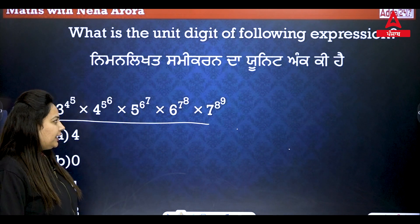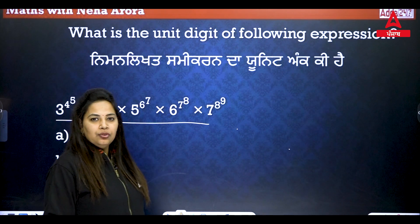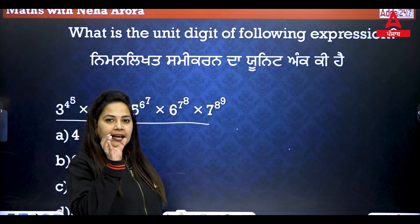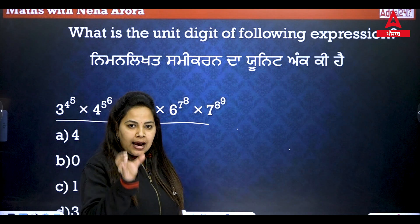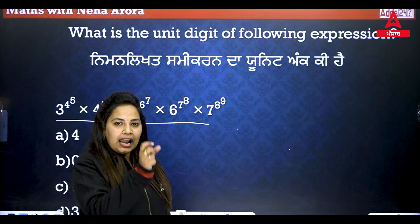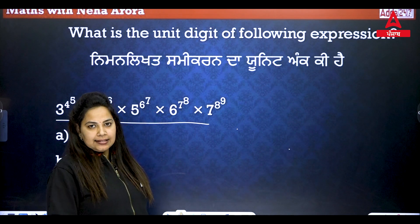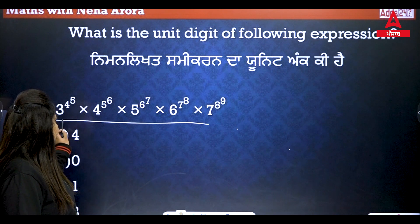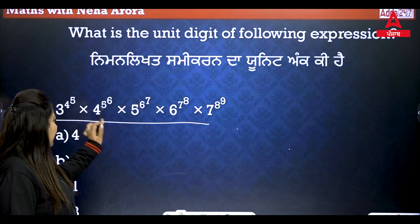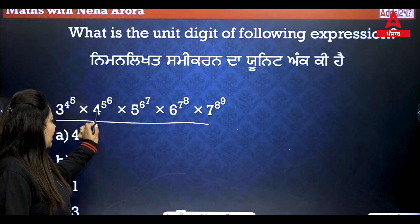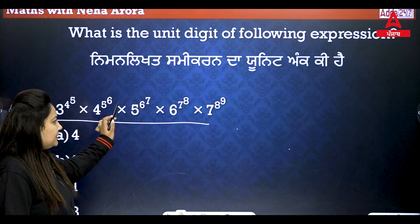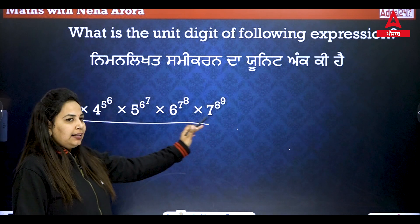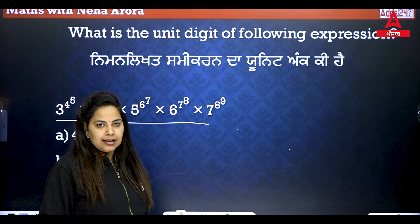We will find out the unit digit. Whatever the answer will be, the last digit will be determined. We have: 3 power, 4 power, 5 power, 5 power, 5 power 6. We will answer this one.